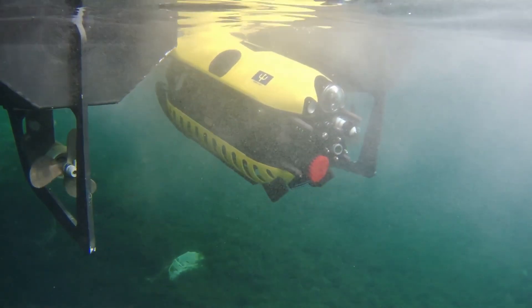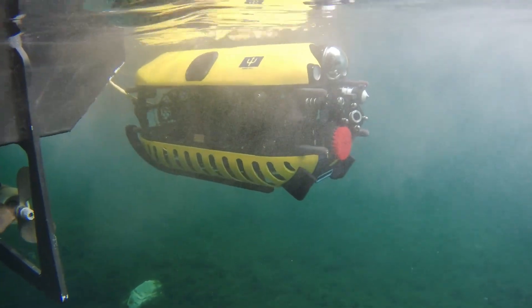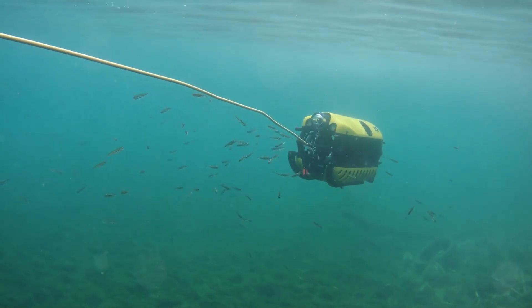Thanks to its high thrust capacity, the Tortuga then dropped the litter in the collection basket deployed from the sea catch USB.